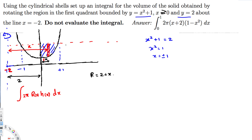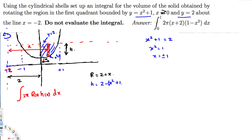Now let's find the height of the rectangle. To calculate the height, we take the upper function y = 2 minus the lower function x² + 1. So height = 2 - (x² + 1) = 2 - x² - 1 = 1 - x².